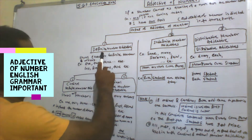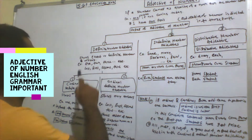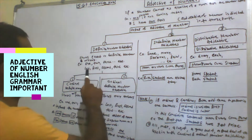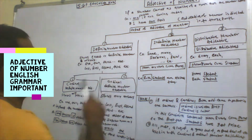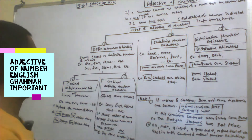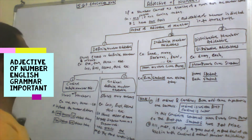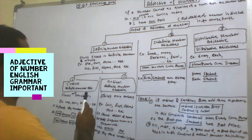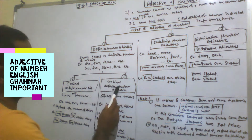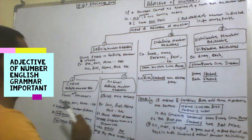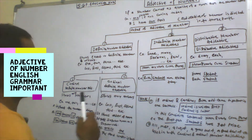Let's go to the first type: definite number adjective. It shows an exact and definite number or order. Examples: one, two, three — and first, second, third — all numbers and orders. There are two parts of this type: first is cardinal definite number adjective, and second is ordinal definite number adjective. Cardinal shows only number, and ordinal shows only order.